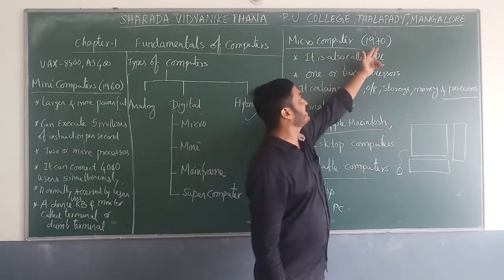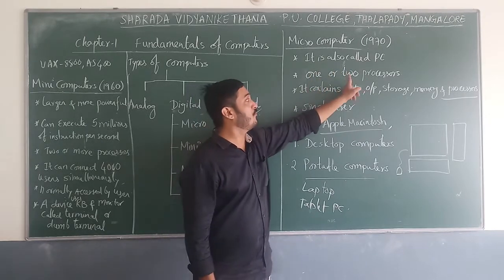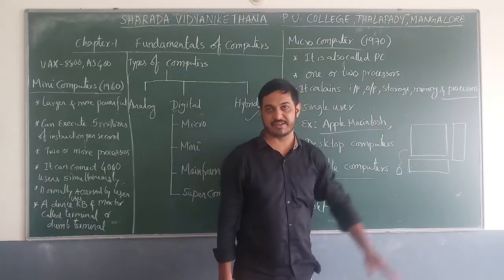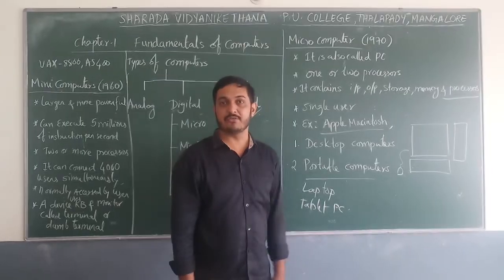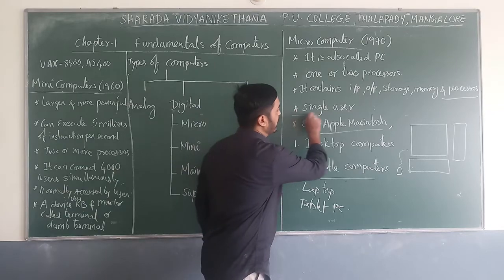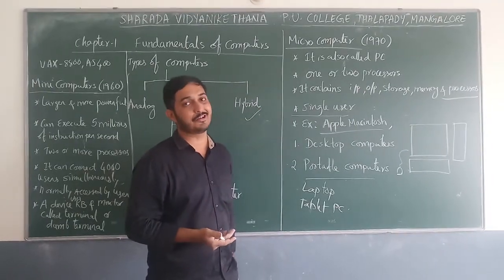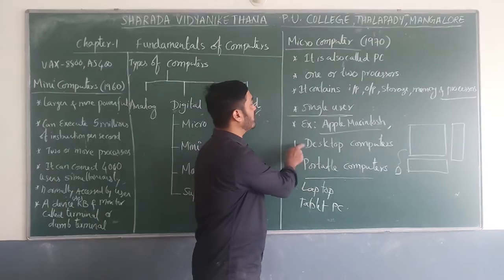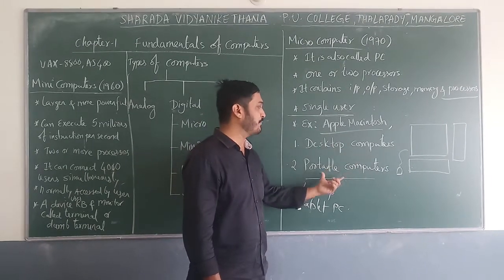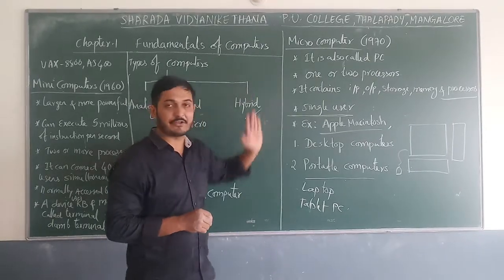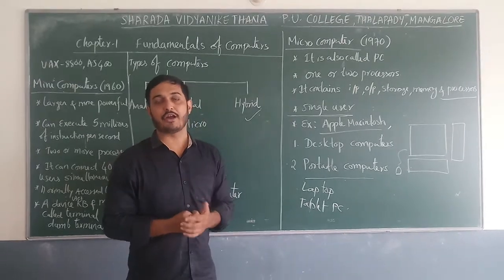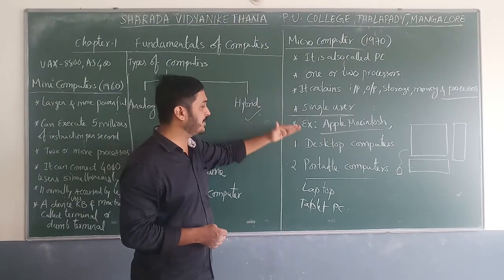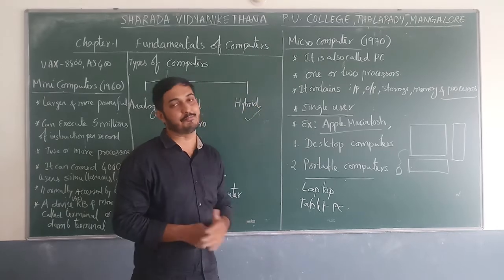To summarize: micro computers were invented during the 1970s, also called PC, using one or two processors, containing input, output, storage, memory and processors, and are single-user. An example is the Apple Macintosh. Types include desktop computers and portable computers. This is very important for examination — expect a five-mark question on features of micro computers.